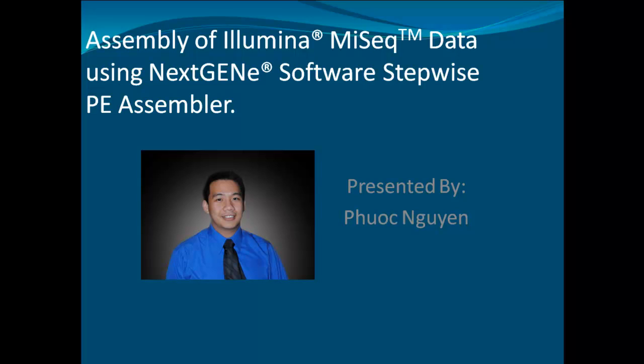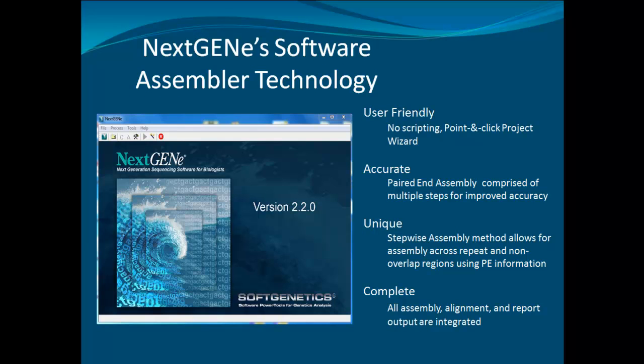Welcome to the assembly of Illumina MiSeq data using NextGene Software Stepwise Pair-End Assembler. My name is Fuquen and I will be the presenter for this webinar. NextGene Software is a user-friendly software package with no scripting required and contains a project wizard that guides you through project setup. In the next few slides, we'll take a look at the project wizard.